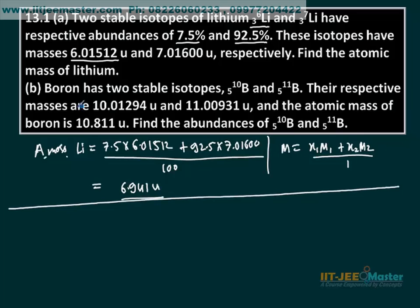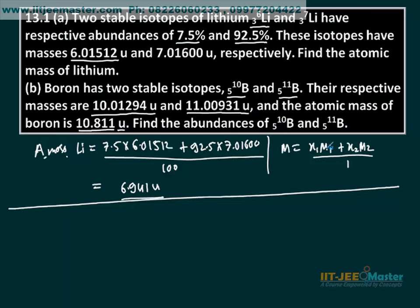Now let's look at the second part. Boron has two stable isotopes — boron-10 and boron-11. Their respective masses are 10.01294 atomic mass unit and 11.00931 atomic mass unit. The atomic mass of boron is 10.811 unit. Find the abundance of boron-10 and boron-11.